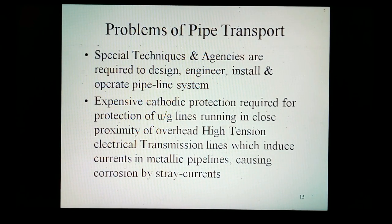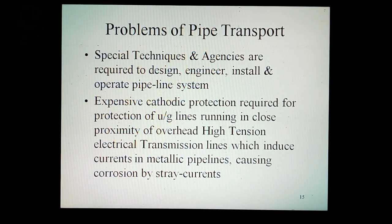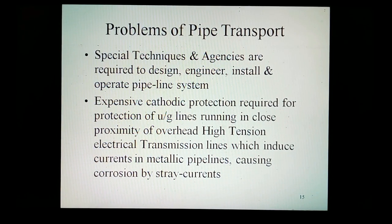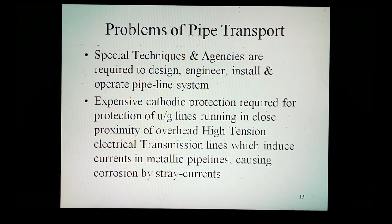Special techniques and agencies are required to design, engineer, install, and operate the pipeline system. Expensive cathodic protection is required for the protection of underground lines running in close proximity to overhead high-tension electrical transmission lines, which induce currents in the metallic pipeline causing corrosion by stray currents.